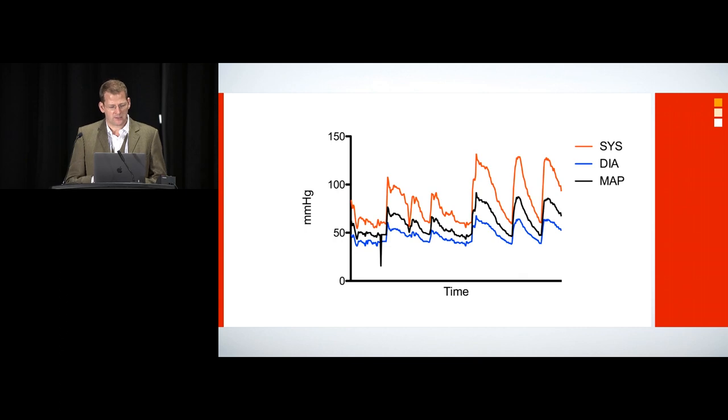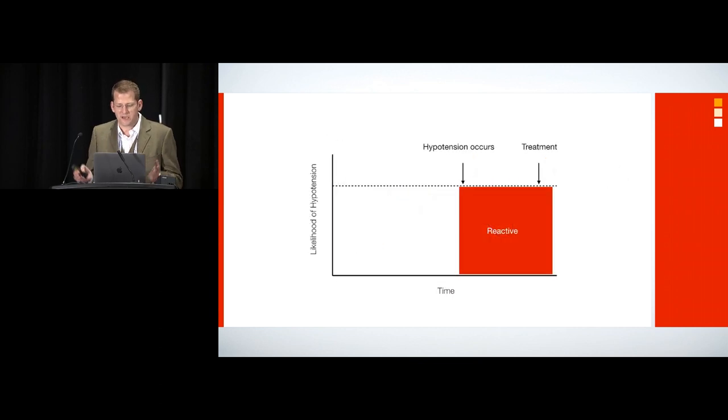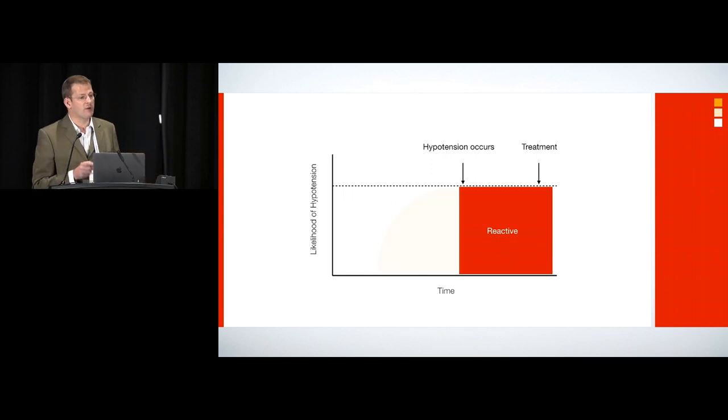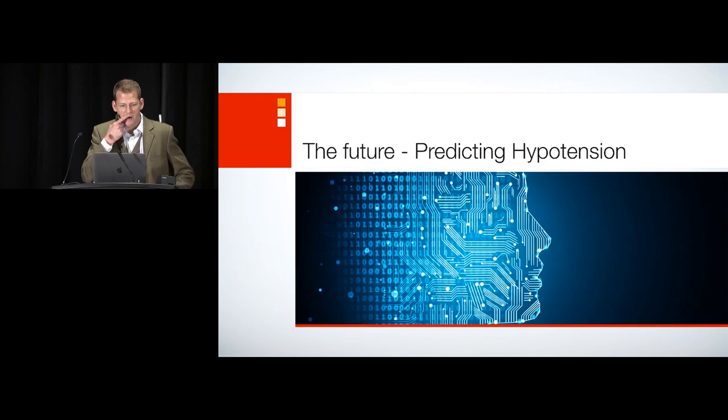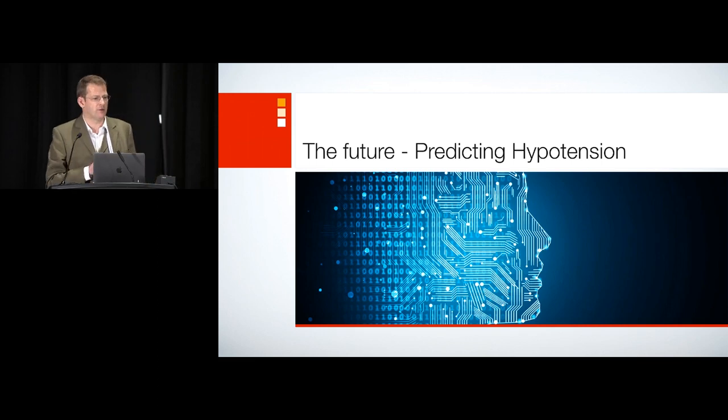But hypotension doesn't just occur. Except for surgical causes, where a clamp comes off or a finger goes in the spleen. There is a process of biological instability that precedes the event. We just can't detect it with our standard monitoring. If we could, we could move to this proactive state where we treat the underlying instability that will lead to hypotension before it actually occurs. And we can do that now using predictive analytics. And we use the arterial waveform signal to do this.